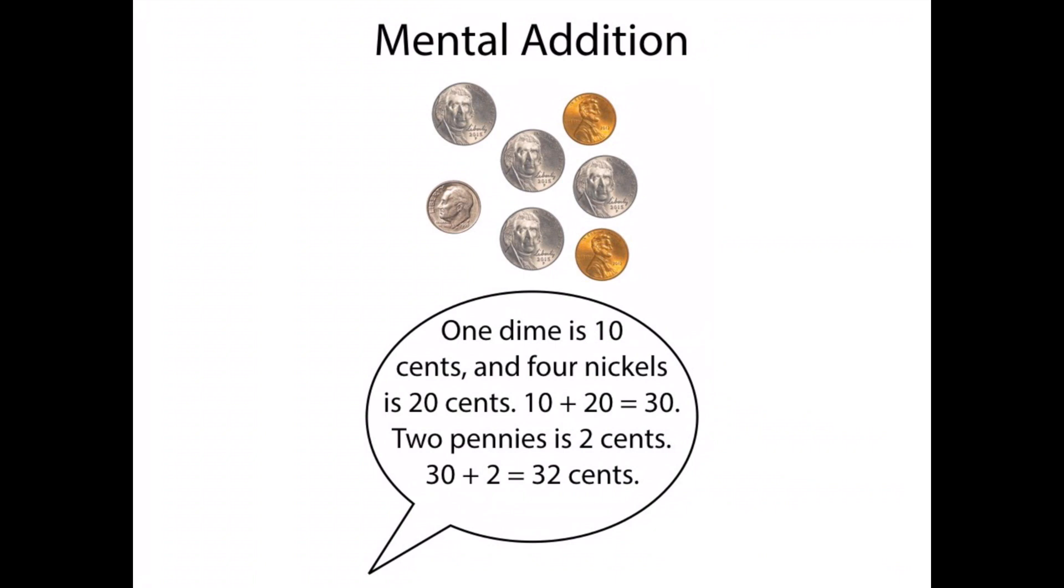Another way is to do some mental addition. Thinking, oh, 1 dime is 10 cents, and 4 nickels is 20 cents. So 10 plus 20 equals 30. 2 pennies is 2 cents. 30 plus 2 equals 32 cents.